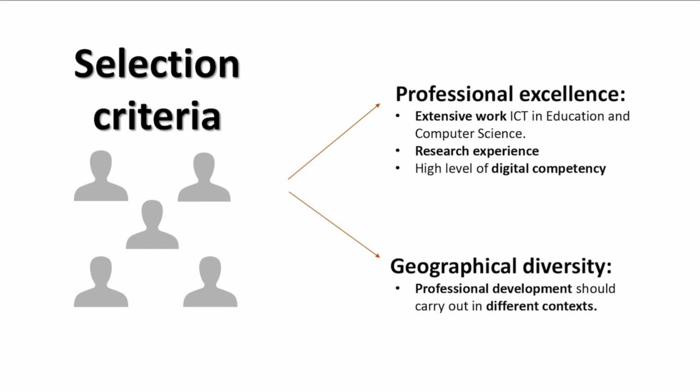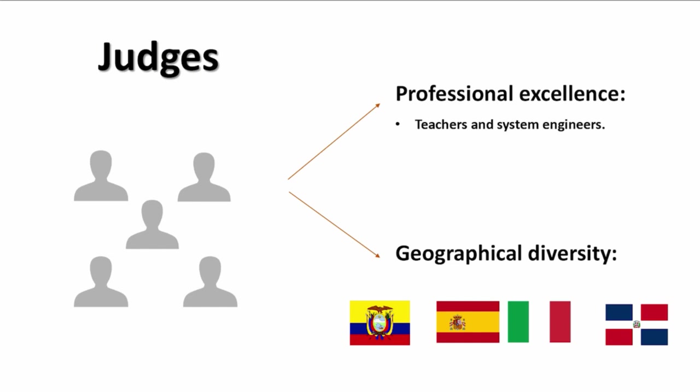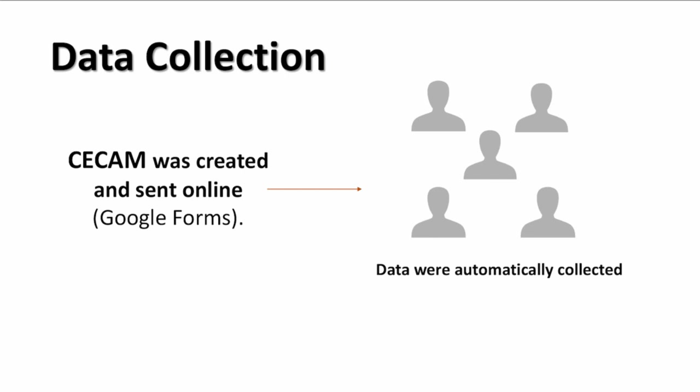Judges Selection. Researchers took two criteria into account to select the five judges who evaluated the Visual app: first, professional excellence, and second, geographical diversity. The questionnaire was created and sent online via Google Forms, and responses were automatically collected through this tool.